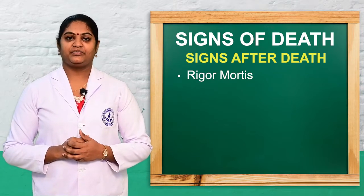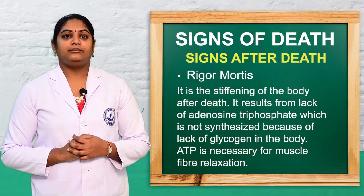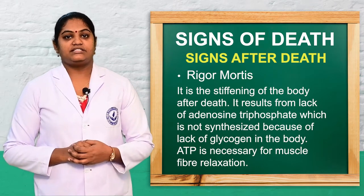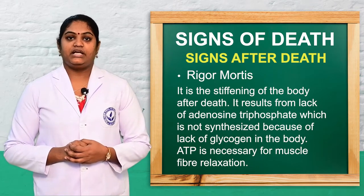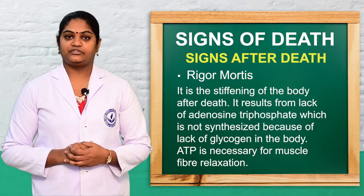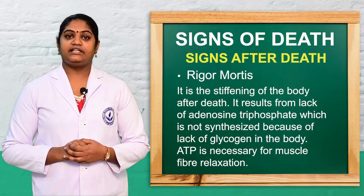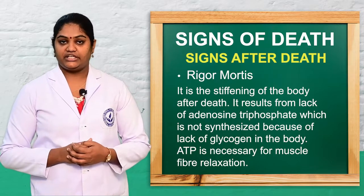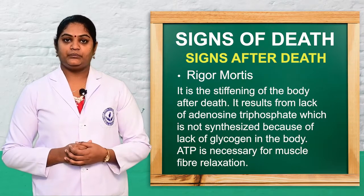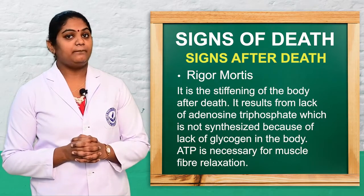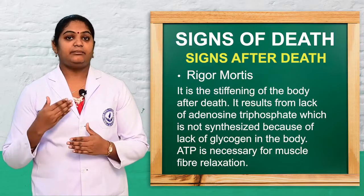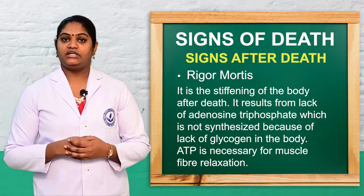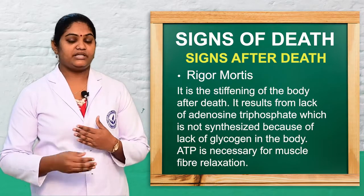The first is rigor mortis, which is the stiffening of the body muscles. After death, around 24 hours, the body muscles become stiffer due to a lack of adenosine triphosphate, that is ATP. This occurs because there is no production of glycogen in the body, so ATP cannot be synthesized, leading to stiffening and rigidity of the body muscles.